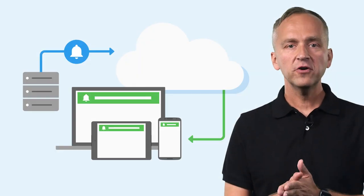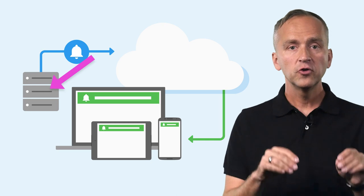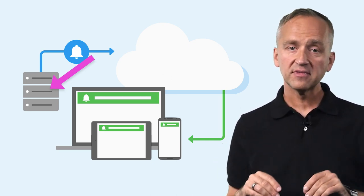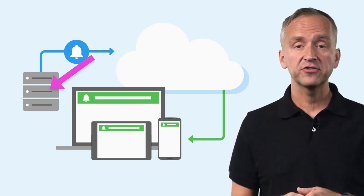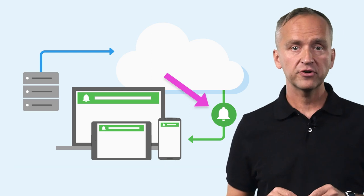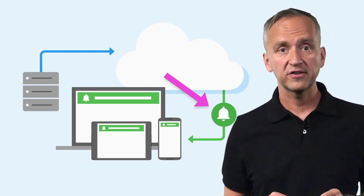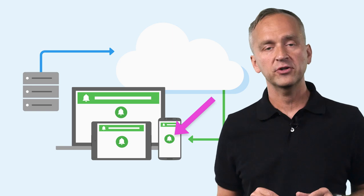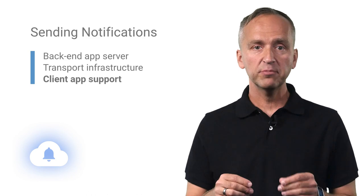So how do you implement notifications? There are three parts to it. First, you need the business logic to decide what to send to which users and when. Typically, this runs in a separate backend application server and is specific to your application. Second, you need the transport layer to efficiently push messages to millions of devices. Third, your app should handle processing of incoming notifications. The first part is something you will need to build yourself, but later in the video I'll show you how to get started. Google Cloud Messaging takes care of the middle part — the one that efficiently pushes messages to millions of devices. For the third part, GCM can display notifications for you automatically, or you can implement your own display logic.